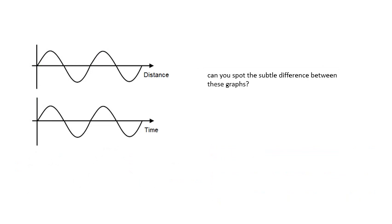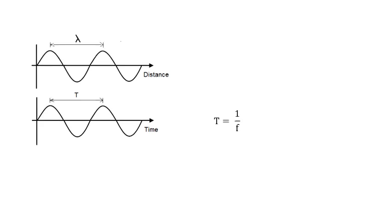Look at these two graphs — don't get them muddled up; they are completely different. They are both displacement, but one is displacement against distance and the other is displacement against time. On the top graph, that distance marked is a wavelength. On the bottom graph, that distance is the period — the time for one complete oscillation. An important equation: T equals 1 over F. The period is 1 over the frequency, and the frequency is 1 over the period; they are the reciprocal of each other.